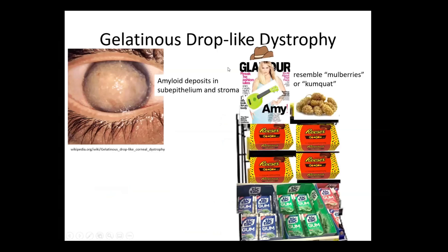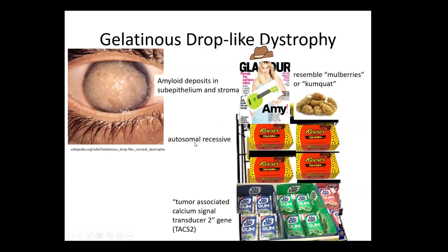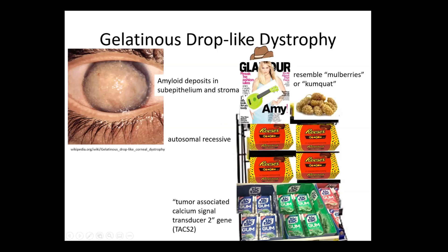The first one is gelatinous. You only need to know a few things: number one, gelatinous is amyloid deposits. Think of jelly beans, and there's a picture of Amy Schumer because amyloid — it kind of looks like mulberries, and that's just another buzzword. It's autosomal recessive and it's on the TGFBI or TACSTD2 gene, so think of tic-tac mint. If they ever show anything that looks like this, it's autosomal recessive. What's the gene? TACSTD2. That's just how it's going to be.